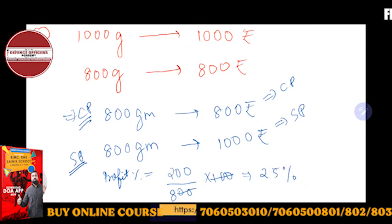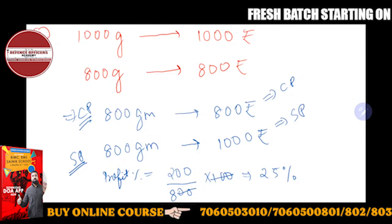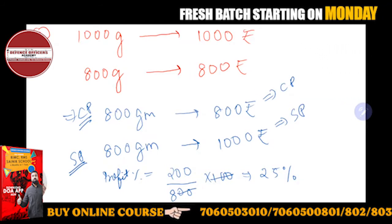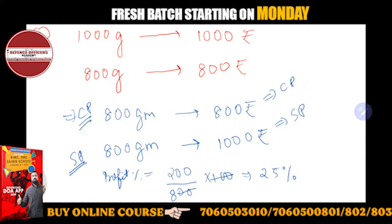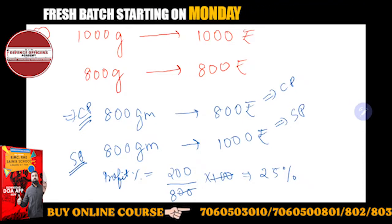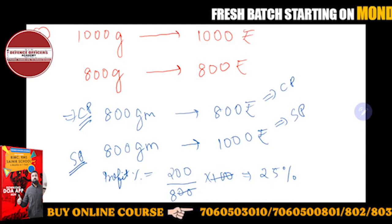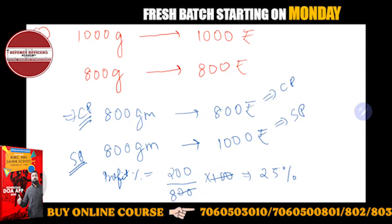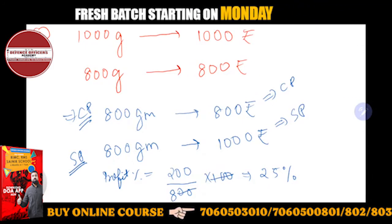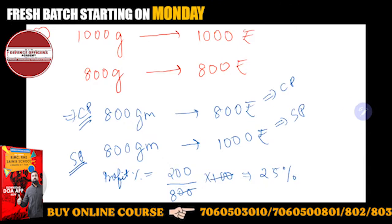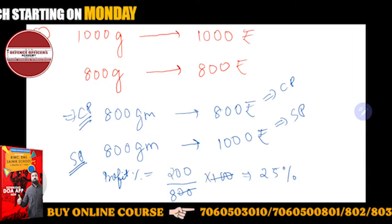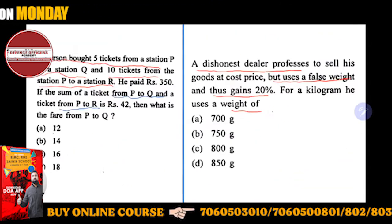I hope you're getting my point. This is coming 25% profit, not 20%. So 800 grams was said to be the right answer, which is wrong. If instead of 1000 grams he uses 800 grams, he gets 25% profit — but the question says the gain should be 20%.